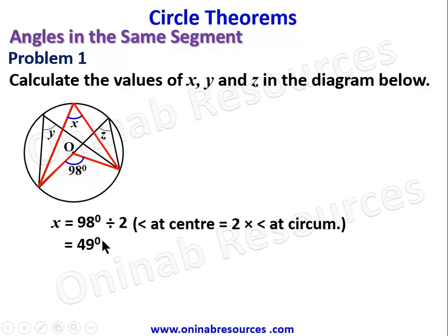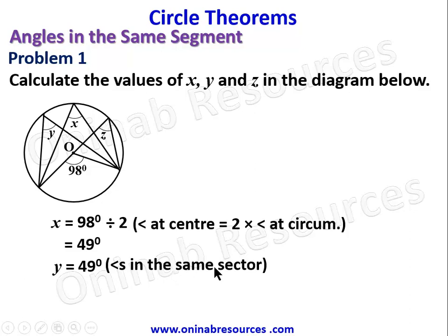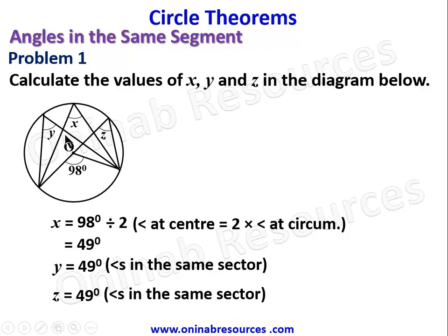This gives us x equal to 49 degrees. Since this is a sector of the circle, the other angles are in the same sector. Therefore y is equal to 49 degrees, that is angle in the same sector, and z is equal to 49 degrees, the reason being angles in the same sector of the circle. With this we have done justice to problem one.